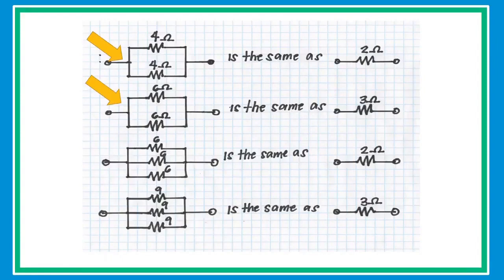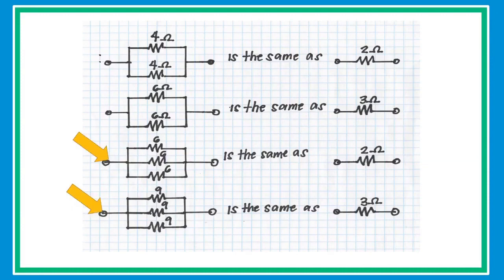If two resistors connected in parallel have the same value, the equivalent resistance is simply half the value. For example, two 4-ohm resistors give 2 ohms, and two 6-ohm resistors give 3 ohms. If three resistors of the same value are connected in parallel, divide the resistor value by the total number of resistors — for example, 6 ohms divided by 3 equals 2 ohms.